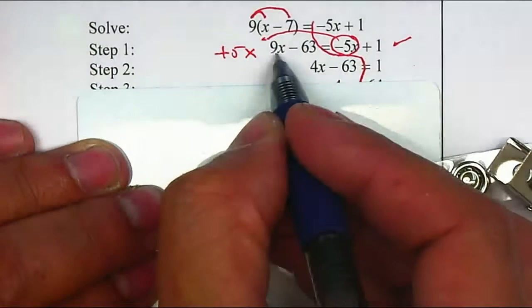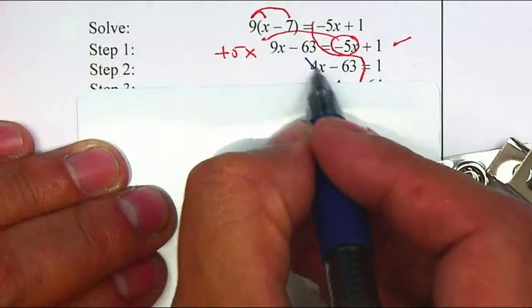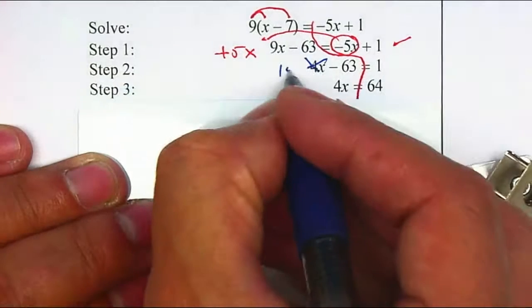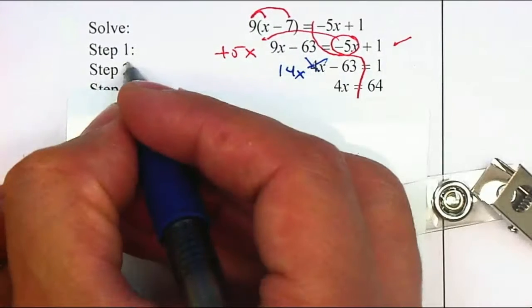Negative 5x plus 9x should be 14x, so the error is on step number 2.